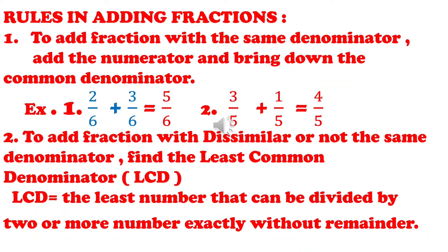Example number two: 3 fifths plus 1 fifth. We have the same denominator, so we add the numerators. 3 plus 1 gives us 4, and we bring down the common denominator, which is 5. That is an example for rule number one.